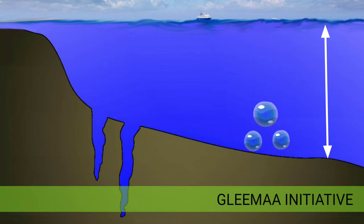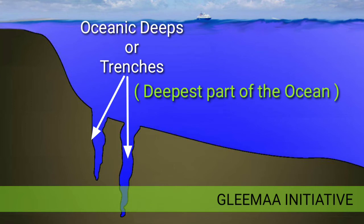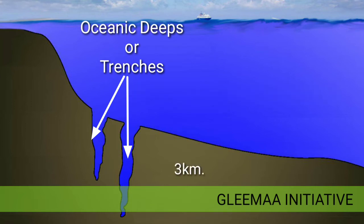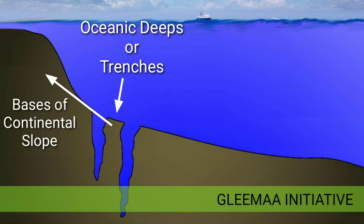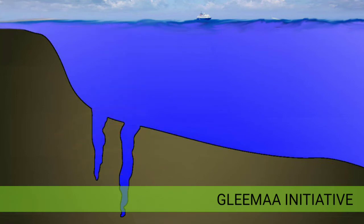Lastly, the oceanic trenches are the deepest part of the ocean, some 3 to 5 km deeper than the surrounding ocean floor. They occur at the base of continental slopes along with island arcs, and are associated with active volcanoes and strong earthquakes.